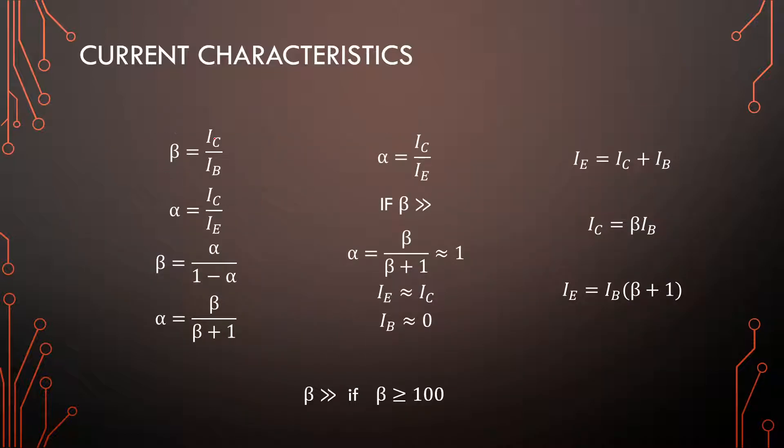So we have beta is IC over IB, which is our current gain. Alpha is the relation of the collector current and the emitter current. And if you plug these equations into one another, if you define alpha and you take IC and plug it in here and you take IE and plug it in here, you get the transformation between alphas and betas. And if you take this alpha equation and just rewrite it to have beta as the topic here, you get the relation from beta, from alpha to beta. So that is kind of nice that you can convert between the two.